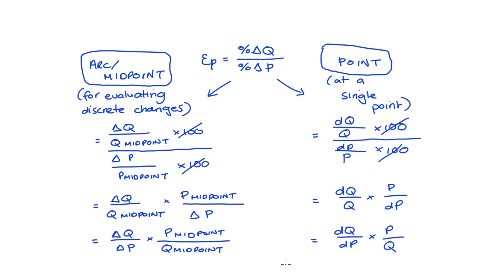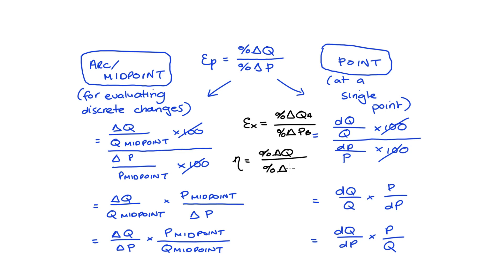Going through this stuff also makes understanding all our other elasticities a lot easier, because you don't need to memorise a whole lot of formulas. All you need is to remember which elasticities relate to changes in which variables. For instance, cross-price elasticity looks at how quantity demanded for product A changes when the price of product B changes. Income elasticity of demand relates quantity changes to changes in income. Once you have those ratios of percentage changes sorted, you can find the formula by following the same steps.